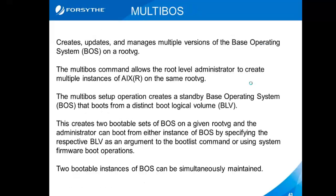MultiBOSS allows me to have multiple versions of the base operating system on RootVG — think of it as almost splitting your disk in two logically. You can have two bootable instances on the same physical disk. Most of the people I'm working with nowadays are using NPIV, so apart from their VIO servers, everything's been booted from SAN. I've not seen MultiBOSS become as popular because it's more likely that you're giving yourself 50 gig LUNs that are perfectly sized for your RootVG.